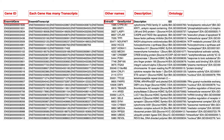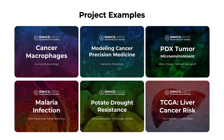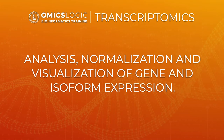The best way to find specific biological examples of meaningful processing, annotation, and interpretation of statistically significant patterns in gene expression data is by looking through example projects. These include working with cancer macrophages, modeling cancer precision medicine with different cell lines, PDX tumor microenvironment, malaria infection, potato drought resistance, or TCGA liver cancer risk through the Cancer Genome Atlas. Let's now talk about analysis, normalization, and visualization of gene and isoform expression.